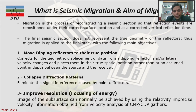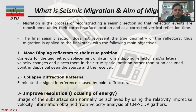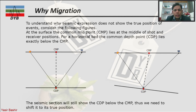The third objective of migration is to improve resolution and focus the energy. The image of the subsurface can normally be achieved using relatively imprecise velocity information obtained from velocity analysis, CMP and CDP gathers, which we discussed in previous chapters. These are the three main objectives of seismic migration.